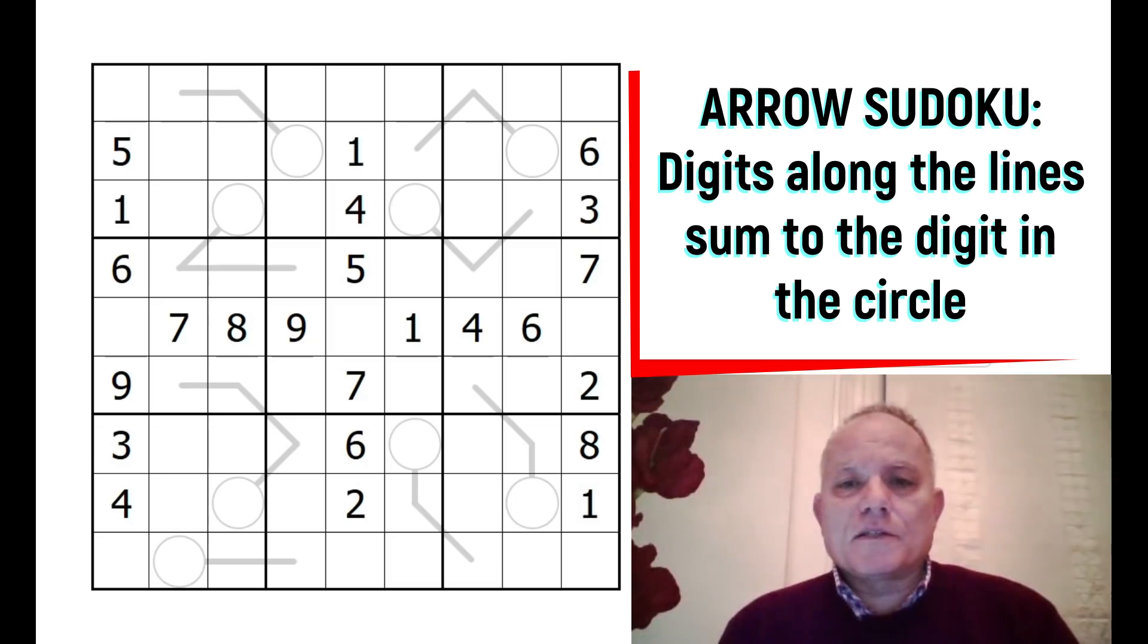This is an arrow Sudoku. The rules are that along each arrow or line, the numbers leading up to the circle add up to the number in the circle. Also worth noting is that the lines used here make up the numbers 2020, making this Sudoku represent 2020 because it was for January 2020. That was very clever.